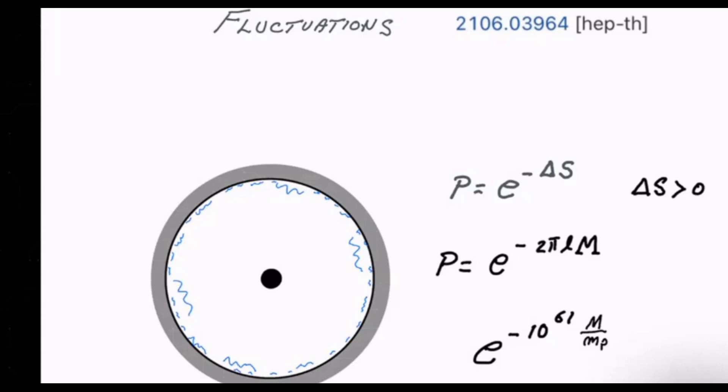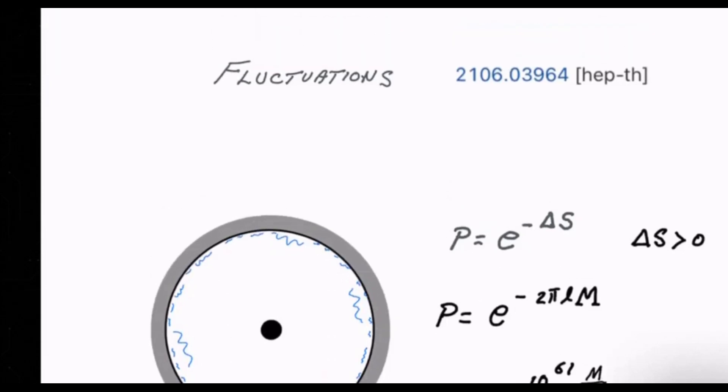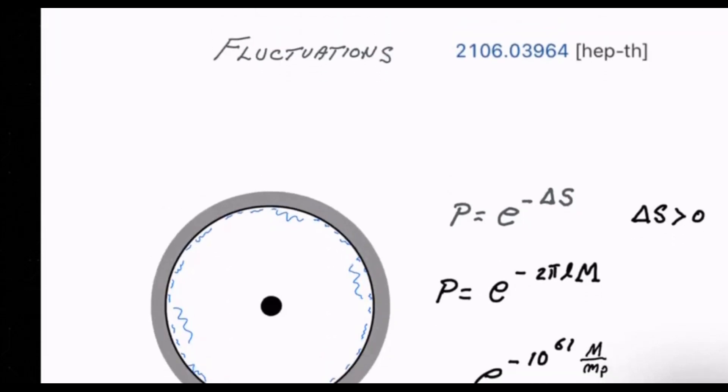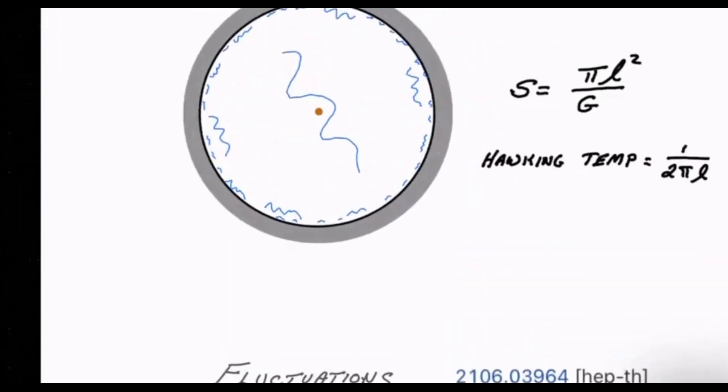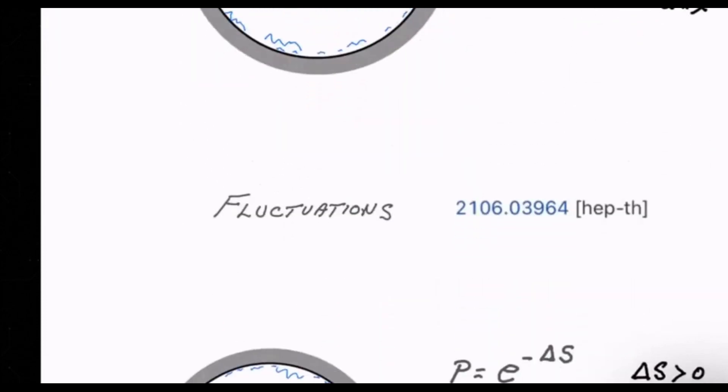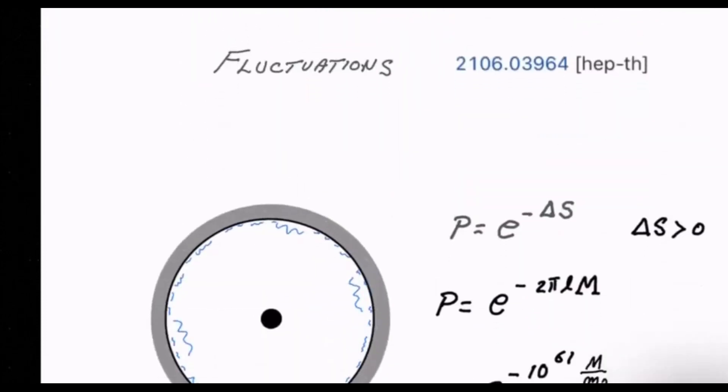One knows how to calculate the probability for this. The probability is E to the minus the entropy deficit. The entropy deficit is the decrease in entropy due to the presence of the black hole. Now you might think that the black hole increases the entropy of the state. But that's not true. Because what you find, if you go back to the original picture, what you find is the nucleation of the black hole shrinks the cosmic horizon.